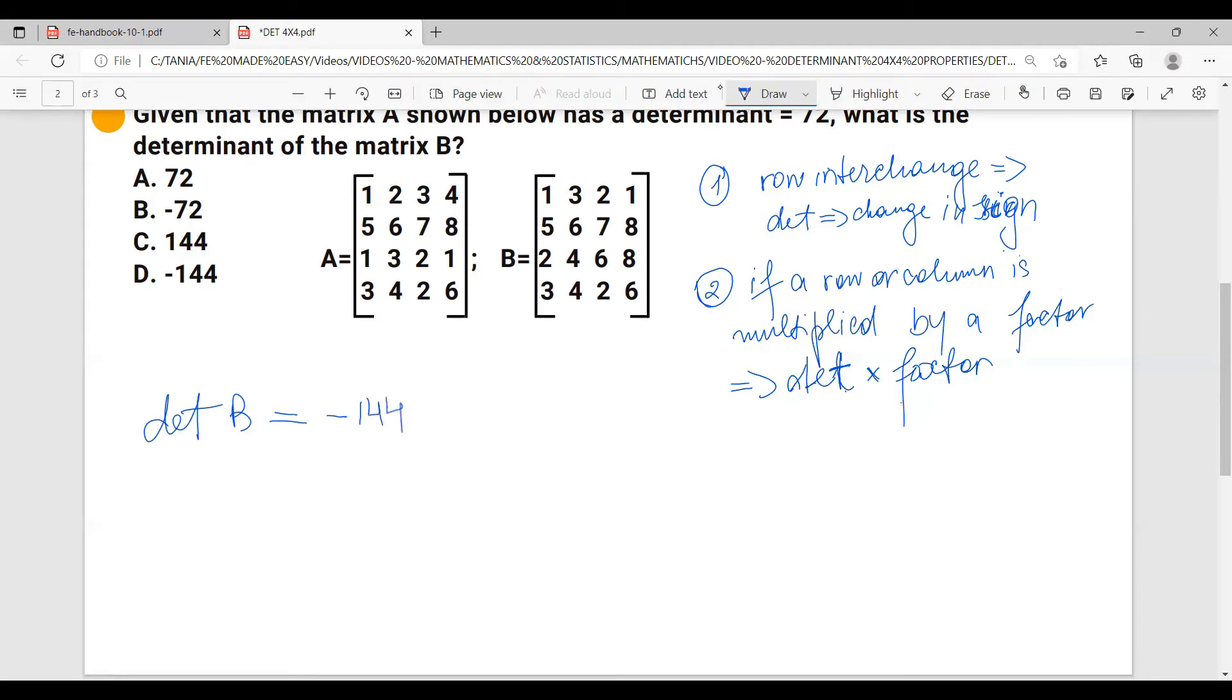So in our case, we already determined that we have a row interchange, which means that the determinant will change in sign, and our row is doubled, which means the determinant is doubled.